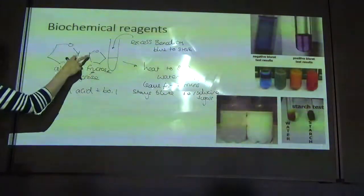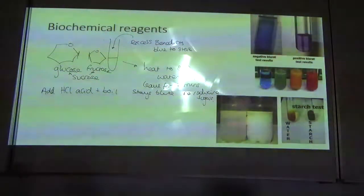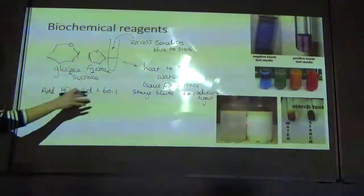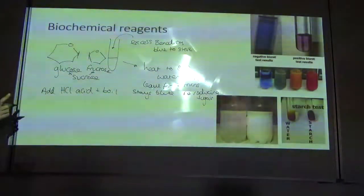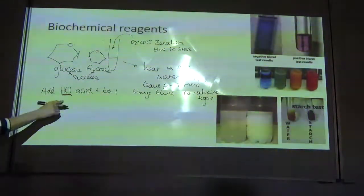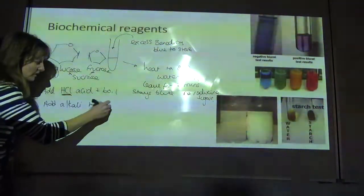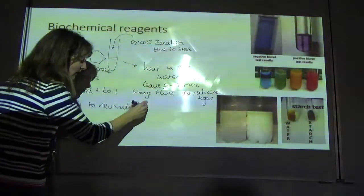Once you have broken the bond, the glycosidic bond, and you've now got your two reducing sugars, then you need to continue with a normal Benedict's test. But before you can do that, because the acid will affect Benedict's, you need to neutralize the acid. So then you add alkaline to neutralize acid.